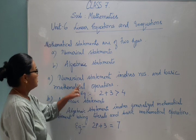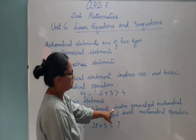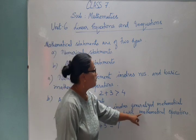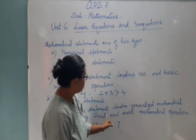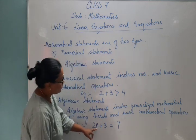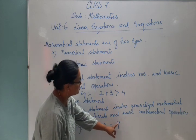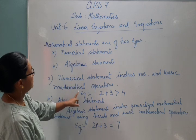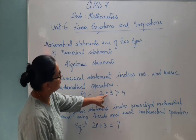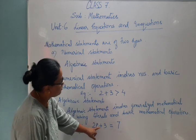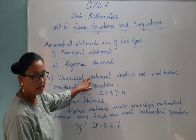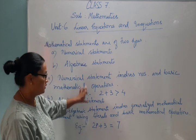An algebraic statement involves a generalized mathematical statement using literals and basic mathematical operations. Literals means those alphabetical letters are known as literals. For example, two P plus three is equal to seven. See the difference — in the numerical example, two plus three is greater than four, there is no variable. But in two P plus three equals seven, P is a variable. This shows the difference between numerical and algebraic statements.